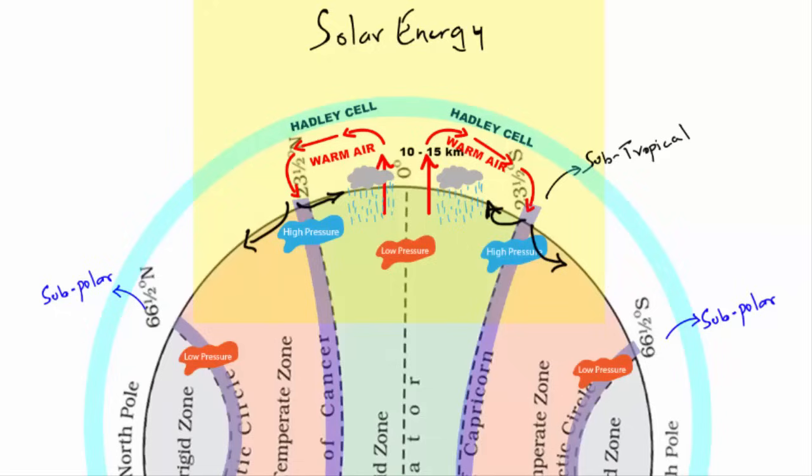Now if you remember, I told you, the air that sinks at the subtropical region that forms the subtropical high, it gets divided into two parts. One part goes towards the equatorial region and the other part goes towards the poles.